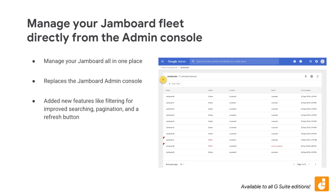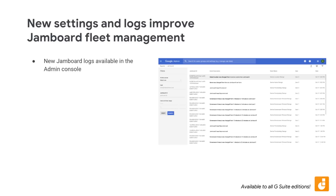We've also added some new features, like filtering for improved searching, pagination, and a refresh button. Visit the Help Center for more on managing Jamboards in the Admin Console. We're also adding new Jamboard logs to the Admin Console. These logs will give you better visibility into the status of your Jamboards and what actions have been taken on them. Logs will be displayed with simple descriptions, and admins will be able to search within and filter these logs to quickly see important information about the status of their Jamboards.